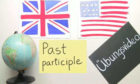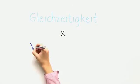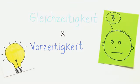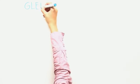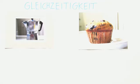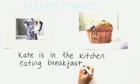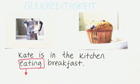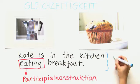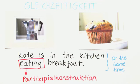In the learning video, we were talking about two terms: Gleichzeitigkeit und Vorzeitigkeit. Gleichzeitigkeit heißt, dass zwei Aktionen zu der gleichen Zeit passieren. Zum Beispiel: 'Eating breakfast' ist dann die Partizipialkonstruktion, und in diesem Beispiel ist sie anstelle von einem Hauptsatz. Man könnte nämlich genauso auch sagen: 'Kate is in the kitchen and she is eating breakfast.'